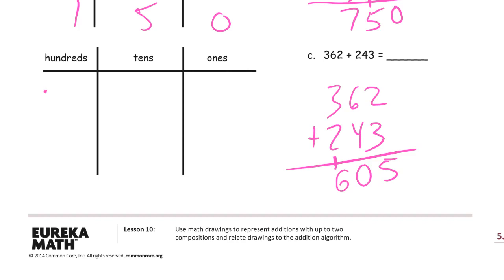Three hundred sixty-two is three hundreds, six tens, and two ones. Two hundred forty-three is two hundreds, four tens, and three ones. I only have five ones here. But I'm looking at my tens and I have one, two, three, four, five, six, seven, eight, nine, ten. That's too many.